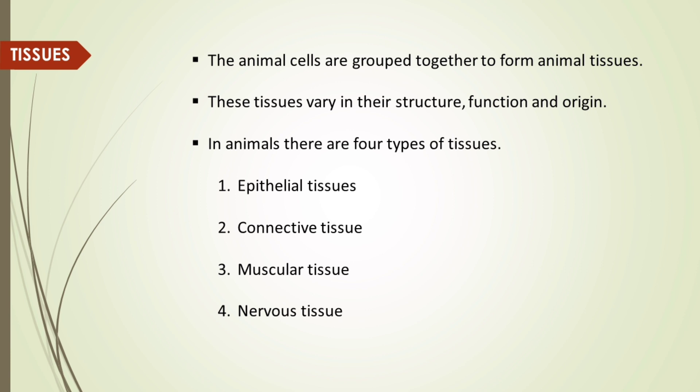The animal cells are grouped together to form animal tissues. These tissues vary in their structure, function and origin. In animals, there are four types of tissues: first one is epithelial tissue, second one is connective tissue, third one is muscular tissue, fourth one is nervous tissue.